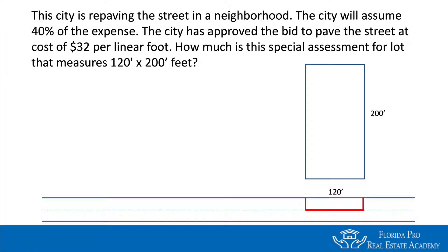In this question, we're trying to determine how much the special assessment for paving is on a lot that measures 120 feet by 200 feet. The first number is going to be your frontage. So when you see this on the test, make sure you take the 120 feet as your frontage — that's a 120-foot-wide lot that is 200 feet deep.